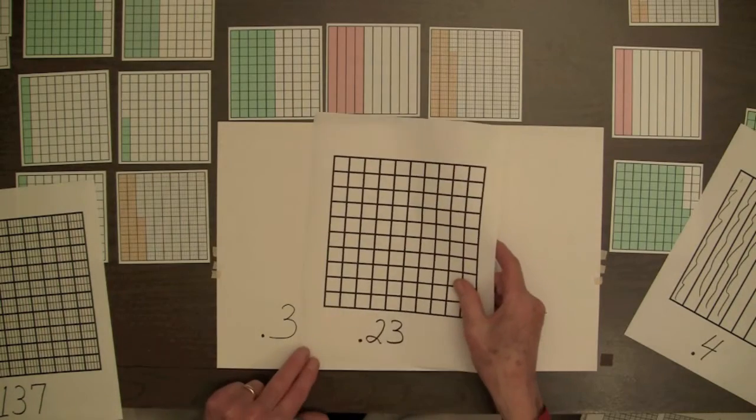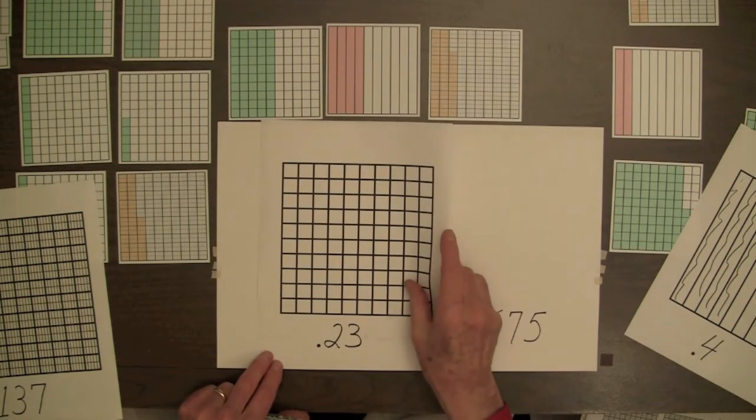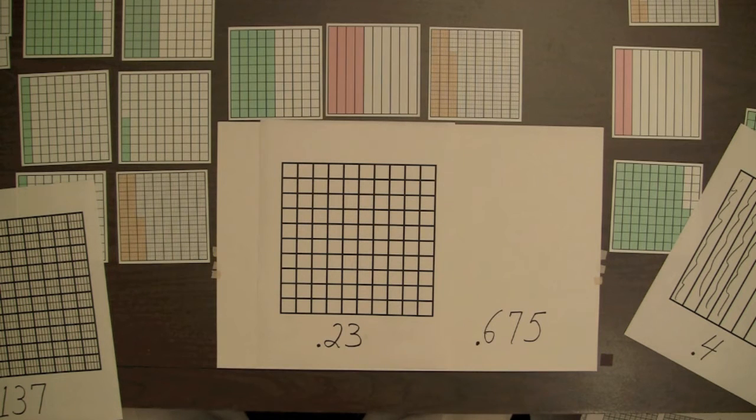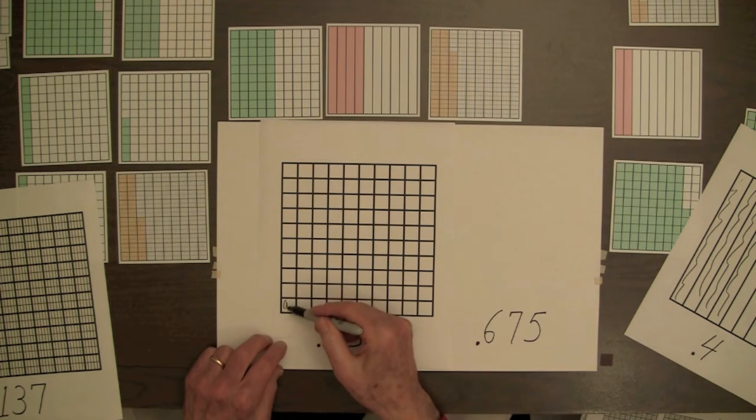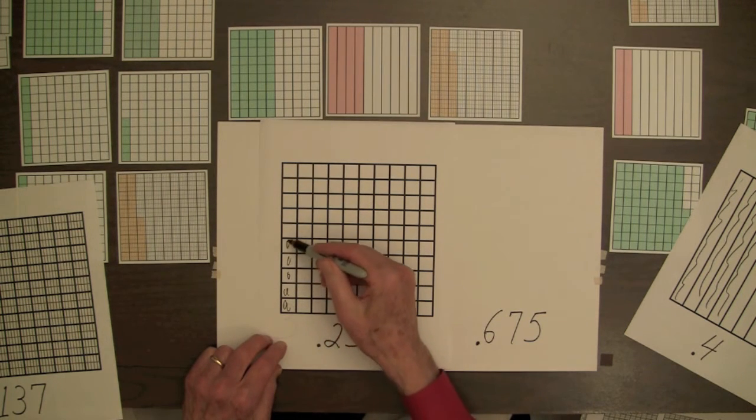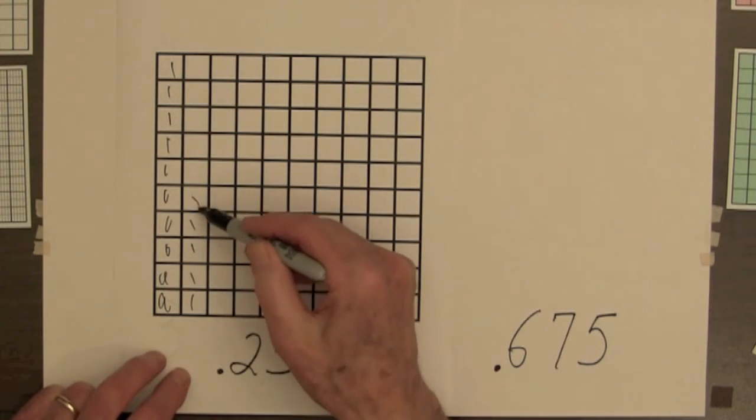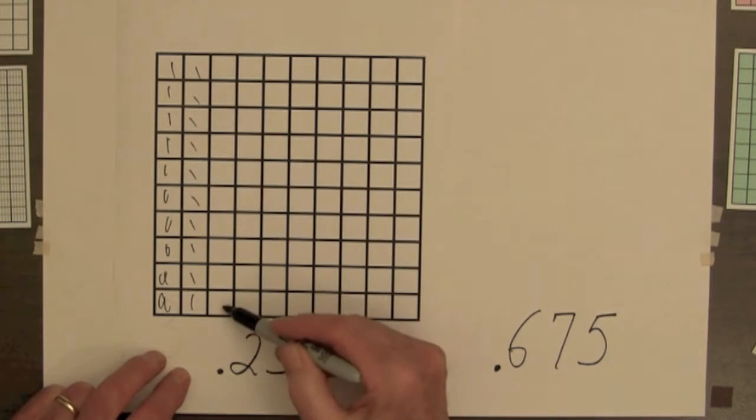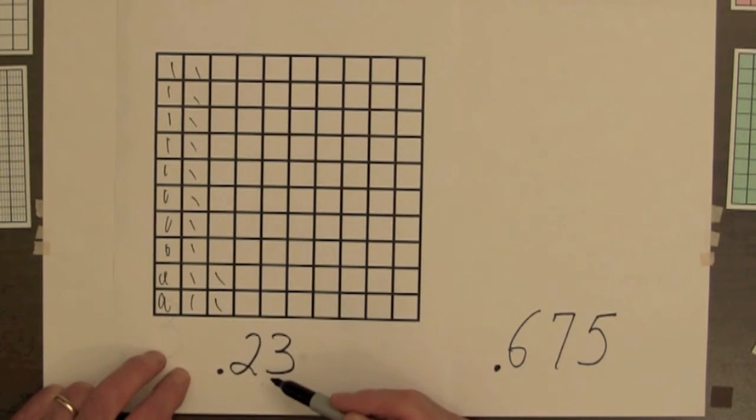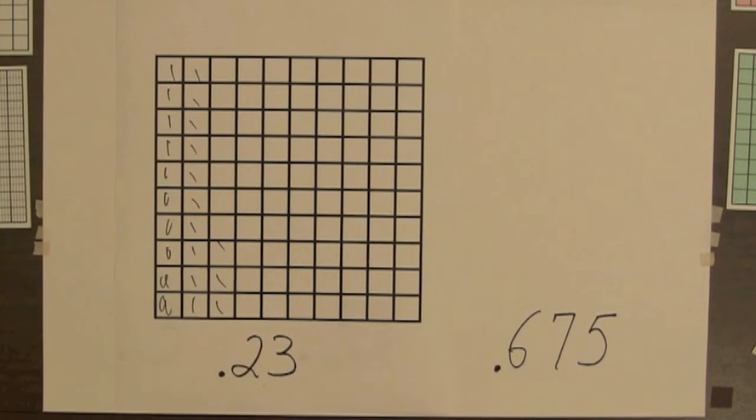And a square for hundreds. Let's shade the first column. There's 10, 10, 10, 20, 3, 23 parts out of 100, with a decimal point 2, 3.